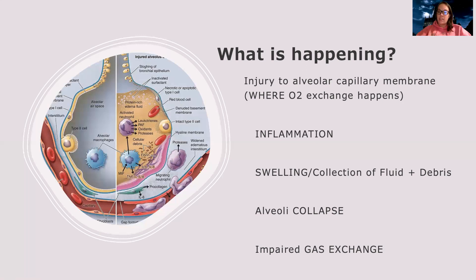When the alveoli collapse, you don't have gas exchange like you need. Looking at the picture, a normal lung has occasional particles but oxygen exchange can still happen — oxygen gets in, CO2 gets out. But in ARDS, the alveoli fill with fluid and particles. There's no way oxygen can get in, and no way CO2 can get out. The bigger problem is we can't get oxygen in.